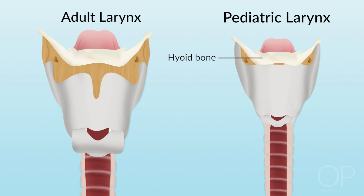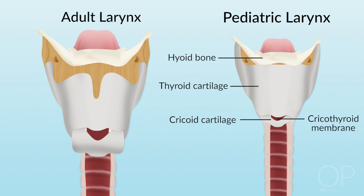The hyoid bone sits over the thyroid cartilage, and the thyroid cartilage overlaps the cricoid. This will stretch out with age, but in an infant, the hyoid bone can make palpation of the thyroid cartilage landmarks difficult. And because the thyroid cartilage overrides the cricothyroid membrane, cricothyroidotomy is generally not possible in children.